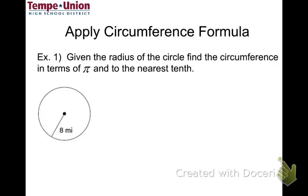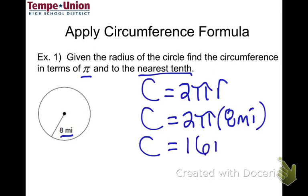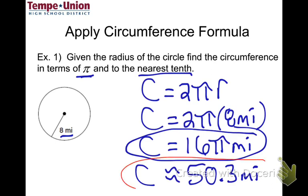Now let's apply the formula. Starting with C equals 2πr, the problem gives a radius of 8 miles and asks for the circumference in terms of π and to the nearest tenth. Substituting: C equals 2π times 8, which equals 16π miles. In terms of π that's the answer; to the nearest tenth, multiplying 16 times π gives approximately 50.3 miles.